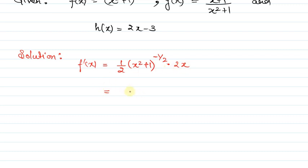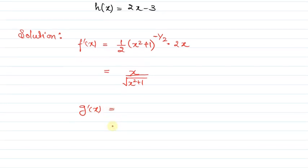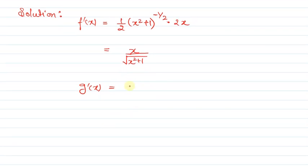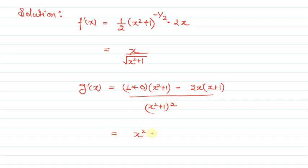Now we differentiate g(x). So we get g'(x) using the quotient rule. The denominator is x squared plus 1, and we apply the formula. This gives us (x squared plus 1 minus 2x squared minus 2x) divided by (x squared plus 1) squared.